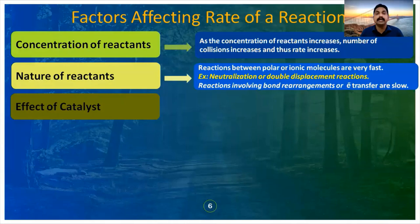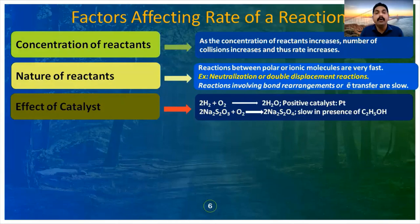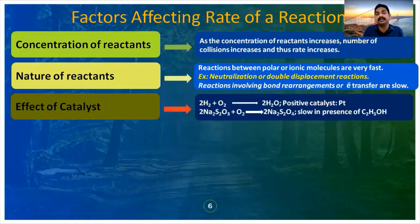For example, hydrogen reacting with oxygen to form water — if we use platinum as a catalyst, the rate of reaction increases. Another example: sodium thiosulfate reacting with oxygen. If we use ethyl alcohol as a catalyst, this acts as a negative catalyst and decreases the rate of reaction.